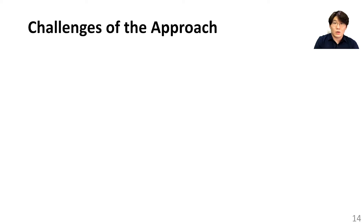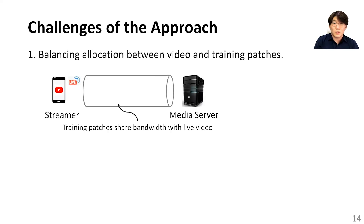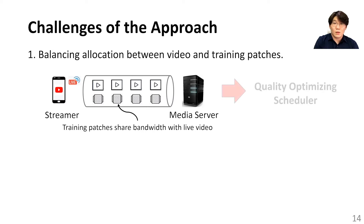The online training approach, however, involves solving non-trivial challenges. First, the high-quality patches that a client transmits share the ingest side bandwidth with the live video. Allocating large bandwidth for training patches can improve super-resolution; however, it leaves less bandwidth for live video, which can cause quality degradation. To address this challenge, we introduce the quality-optimizing scheduler that effectively balances the allocation of uplink bandwidth between training patches and live video.